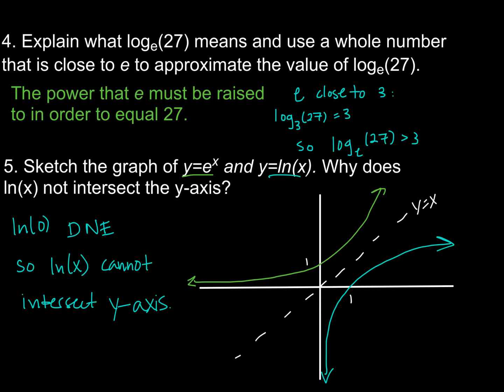All right, this is your favorite question here, explaining what log base e of something actually means. Remember that this can be verbalized as the power that e must be raised to in order to equal 27. Now, e is approximately 3. Not quite, we know this, but the whole number that is closest to it is 3. e is a little bit less than 3. So log base 3 of 27 is the power that 3 must be raised to in order to equal 27. And that's 3. Now, since e is a little less than 3, we know that we're going to need to raise it to some power that's greater than 3 in order to get 27. So log base e or natural log of 27 is going to be greater than 3.